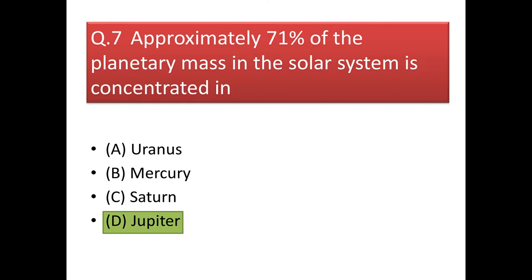Next question: approximately 71% of the planetary mass in the solar system is concentrated in? The answer is it is concentrated in the vast planet Jupiter. Due to its huge mass and volume, it constitutes 71% of the total planetary mass. Note that 71% of the planetary mass is asked — if the question asked about the total solar system, then the maximum mass is contributed by the sun itself.